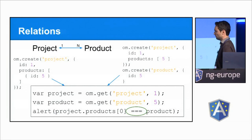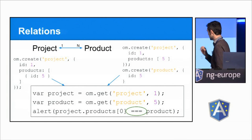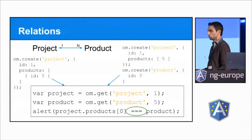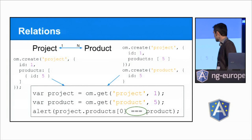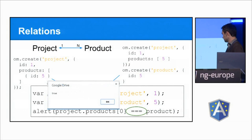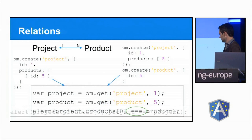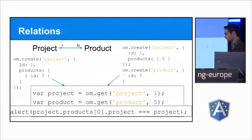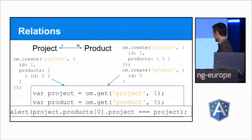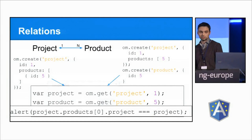This also does the same. You don't have to have the products inline — you can also create them manually later on. And it doesn't even matter in what order you do it. So for the same code, this also alerts true. And you can even do something like this: the first product of the project is linked back to the same project again, and you can see that it is in fact the same project.